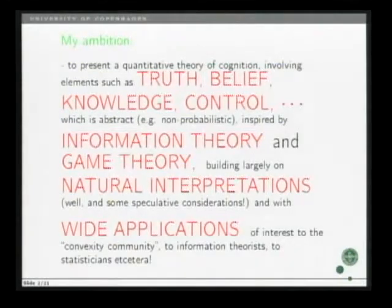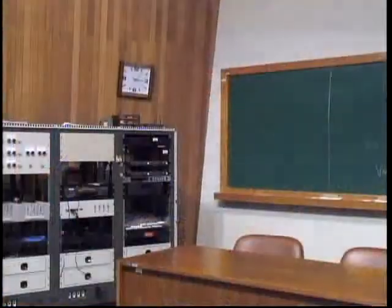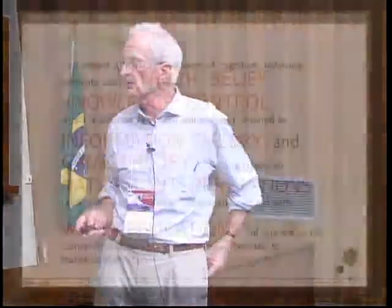I have rather ambitious aims. I want to present a theory where things like truth, belief, knowledge, control, and description appear. The theory will be inspired by information theory and use techniques from game theory, and the key is that I'll base the theory largely on natural interpretations.